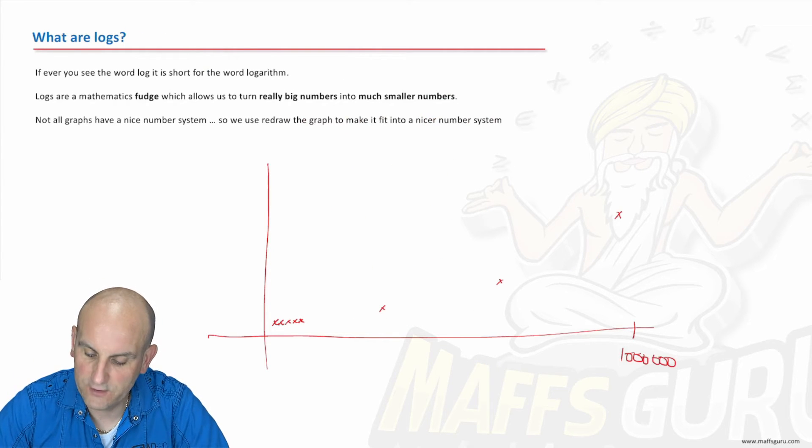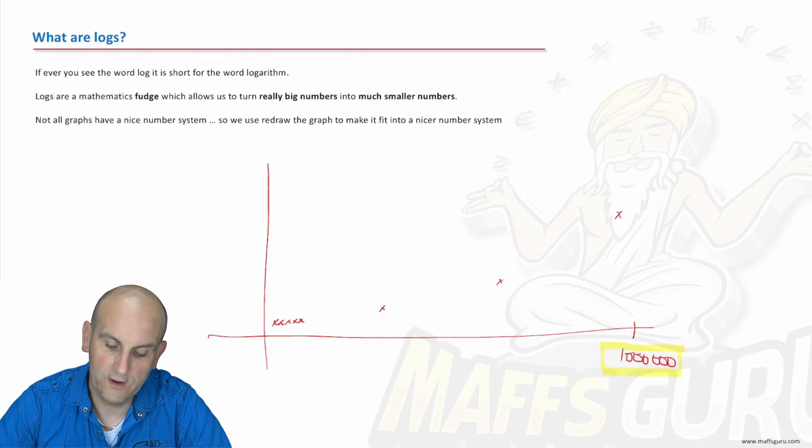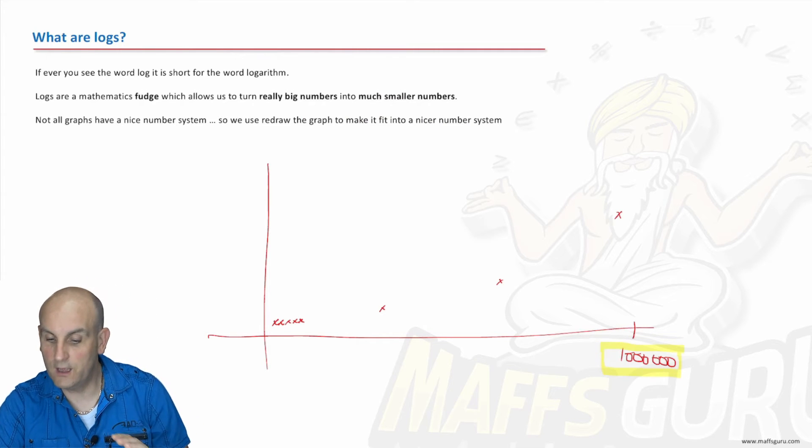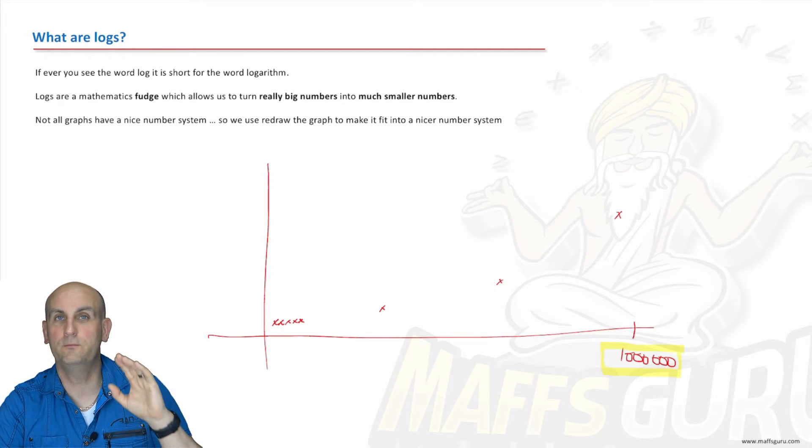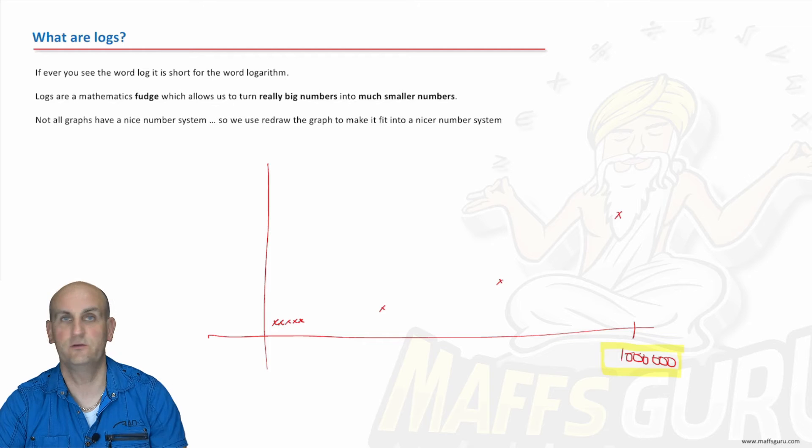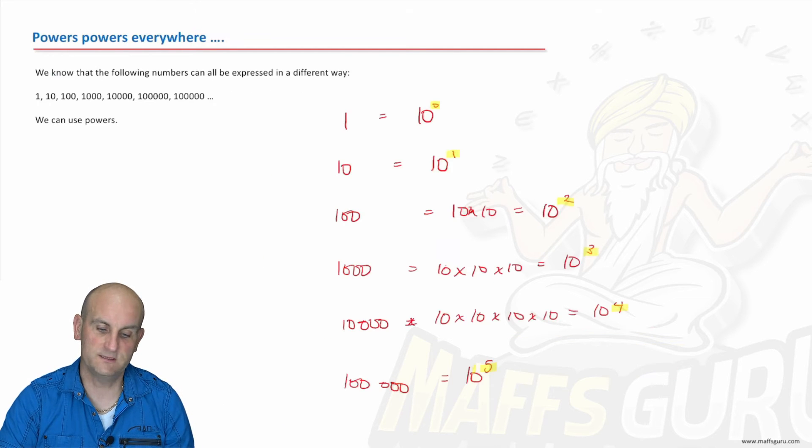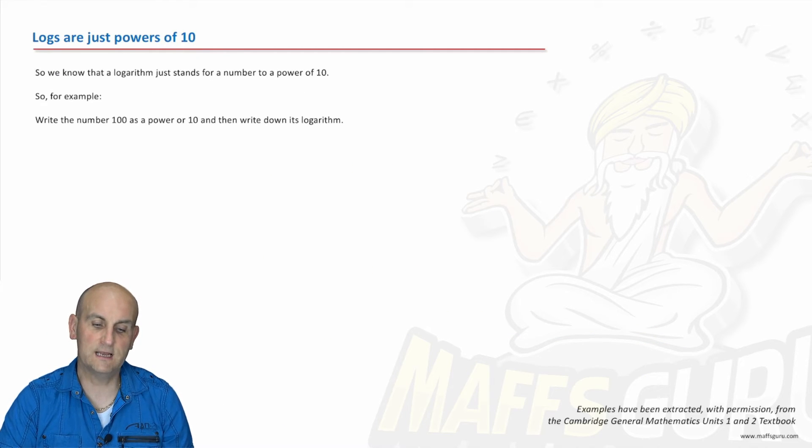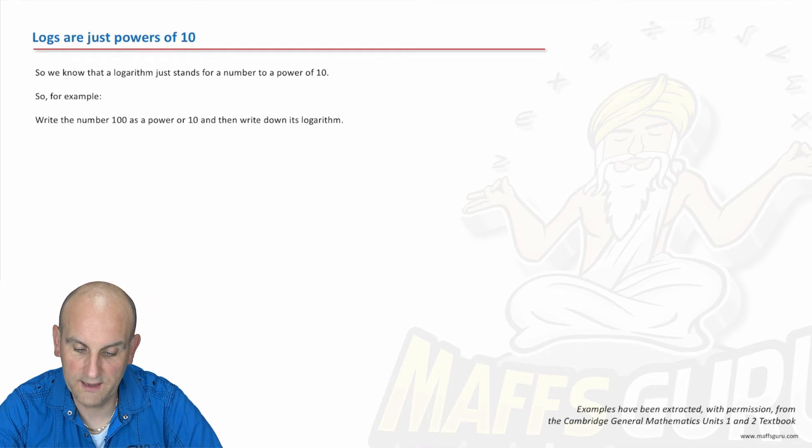I have just turned a really large number of 100,000 into the number 5, if I think of it in a different way. And I've turned 100,000 into 5, 10,000 into 4, 1,000 into 3. Going back to that graph, imagine now if I could redraw this.